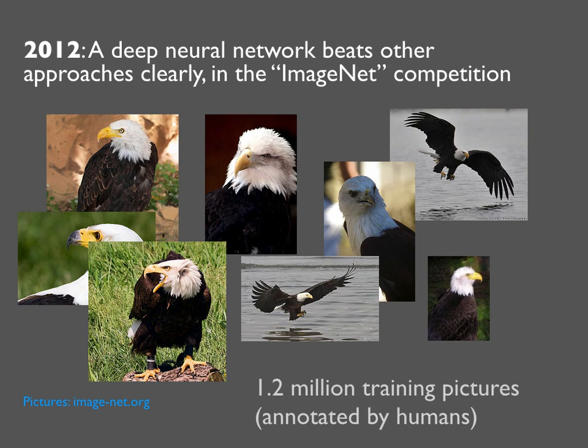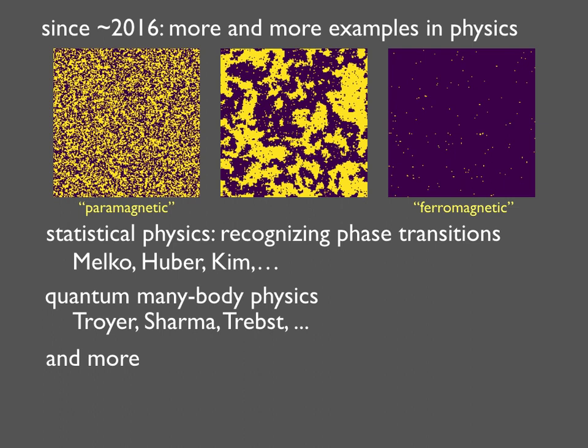Since then, there have been many applications of neural networks in all kinds of areas, and specifically that also includes physics. One obvious example is wherever you have images, because image recognition is one of the strong points of neural networks. If you look at the magnetization pattern in a sample, it will look different depending on whether you are in the paramagnetic phase at high temperatures or at low temperatures. You can train a neural network to distinguish one from the other, and then go to an intermediate temperature and have the neural network figure out where the phase transition temperature is.